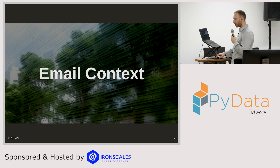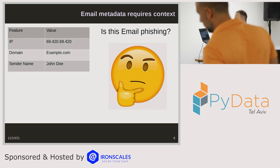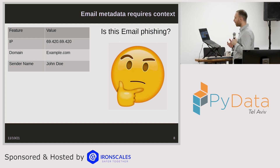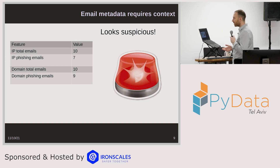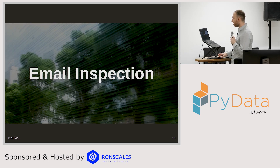What I want to focus on here is email context. When we're looking at an email, we have some metadata — let's say the IP address, here 69.420, the domain example.com, and the sender name John Doe. Does that mean the email is phishing? It's not enough data. A raw IP address isn't enough to make a classification. So we try to get the context of that IP address. Here we can see that this IP has been seen 10 times, and out of those 10 times, seven have already been marked as phishing — so 70% of emails from it are marked as phishing, which is pretty suspicious. Any new email from that IP probably looks like phishing too. This is the idea of IP reputation.